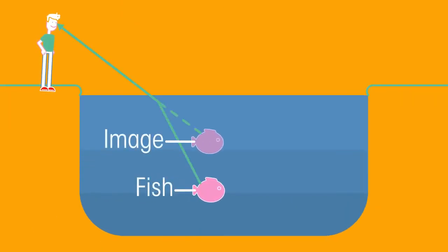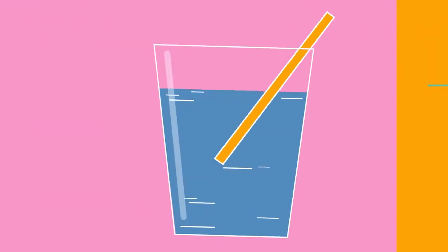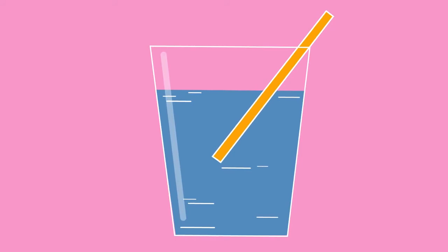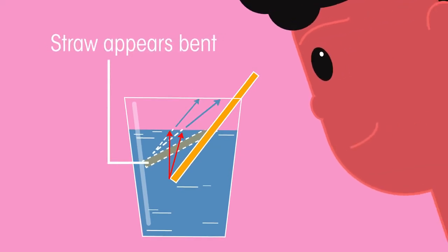Because of refraction, things in water look closer than they really are. Water appears shallower than it really is, and a straw in a glass of water looks like it bends at the surface because the refracted light wavelengths make you think the straw is in a different place.